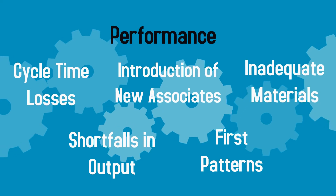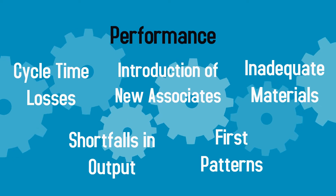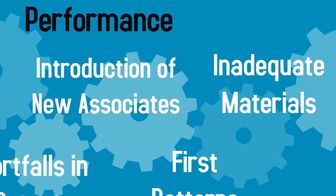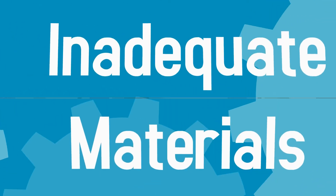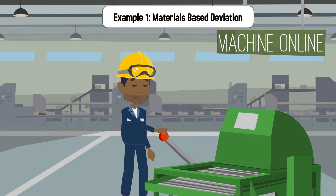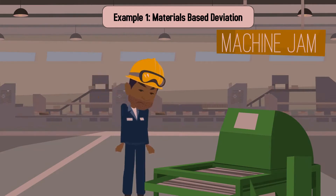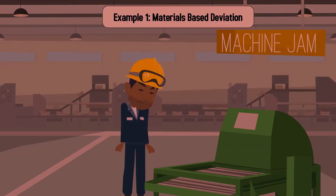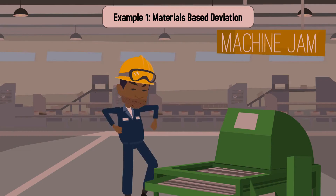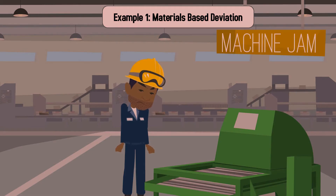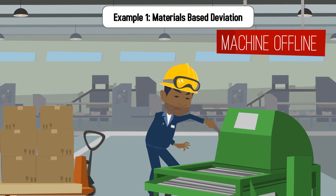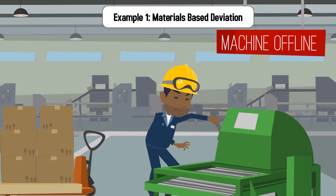Let's now look at an example where inadequate materials cause the performance factor of a product line to be lower than desired. The operator in the sewing department of Company A is in charge of mechanically placing thread into a large sewing machine. Unfortunately, the thread delivered to the department is very low quality and continuously rips inside the machine. As a result, the operator must continuously stop the machine to re-thread the needle inside.